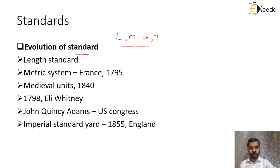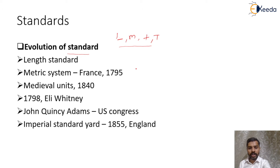Before we proceed with the evolution of standards, we need to understand why it is necessary to have standards. With globalization, there should be fair trade between national and international arenas. Without any standard, this would have been difficult. A good system of standards maintains fair trade between different countries and also helps achieve interchangeability — meaning parts manufactured by two different organizations can be chosen randomly and will fit each other. Standards also help convince customers about product quality.